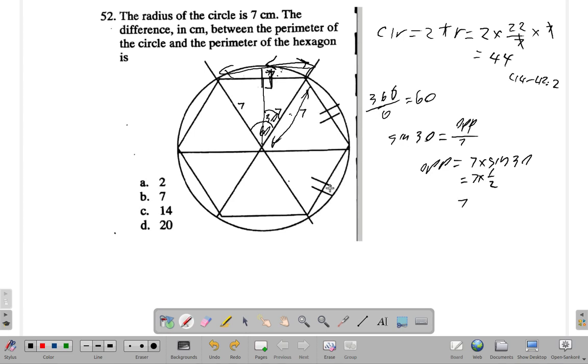So when you have 7, 7, 7, 7, 7, 7—6 of them. 7 times 6 is 42. So the perimeter of the hexagon is 42.